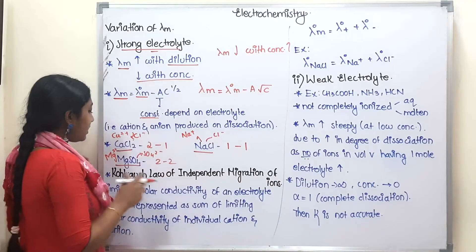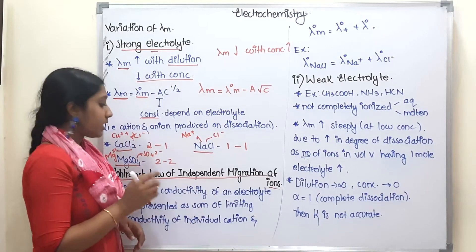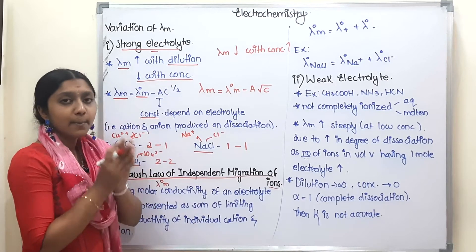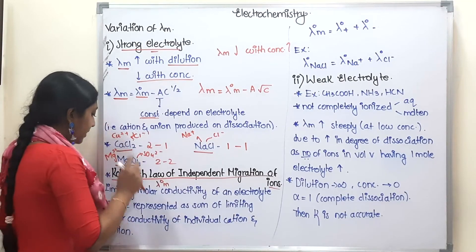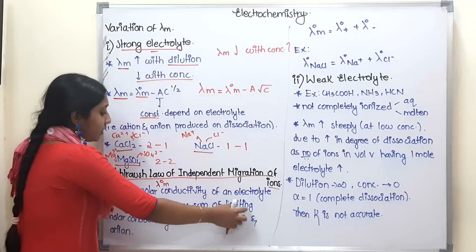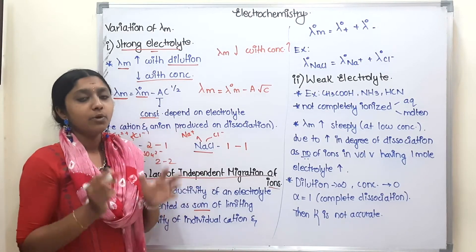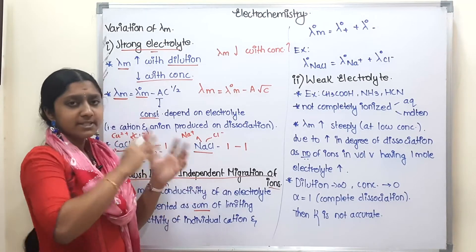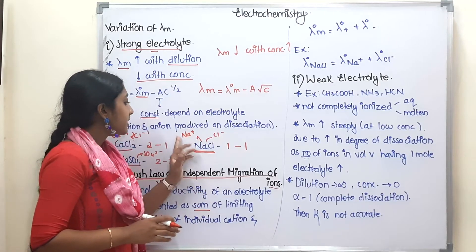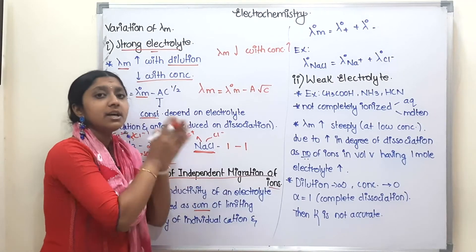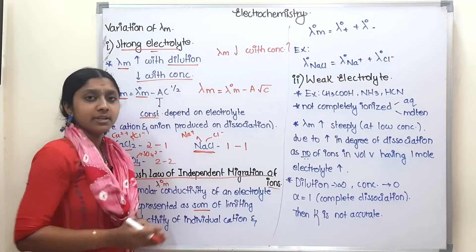Now, the general concept: Kohlrausch's Law of Independent Migration of Ions. The limiting molar conductivity, lambda naught m, for one electrolyte is the sum of the limiting molar conductivities of the individual cation and anion. For example, for NaCl: lambda naught m equals lambda naught of Na⁺ plus lambda naught of Cl⁻. This is Kohlrausch's Law.